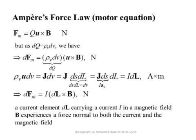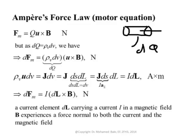We now move forward to discuss the force affecting wires, and how we go from the Lorentz law to derive this case. We consider a small charge element DQ — a tiny volume of charge with volumetric charge density ρᵥ moving with velocity U. The cross-sectional area is dS and the length of the segment is dL.